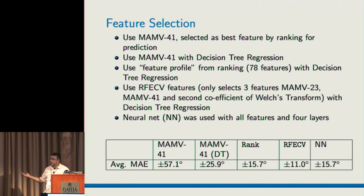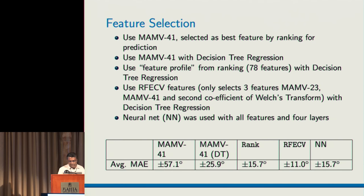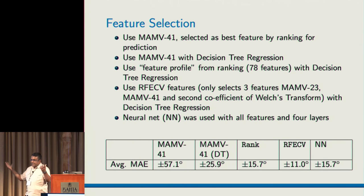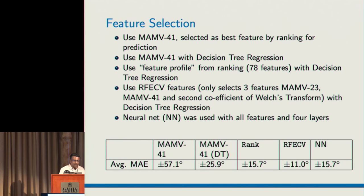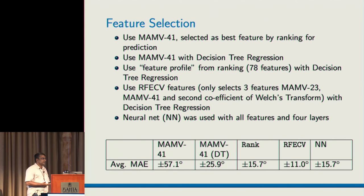When we used the three features selected by RFECV — which uses cross-validation — with the different algorithms, we found that those three features with a decision tree give an error of 11 degrees. This is the average error for both indoors and outdoors; indoors was higher because we are not modeling anything. We also used neural networks with TensorFlow — a manual four-layer implementation without any hyperparameter tuning — and it gave 15.7 degrees. The three features selected were MAMV23, MAMV41, and the second coefficient of the Welch transform; used with a decision tree regressor, they give the best error of 11 degrees.